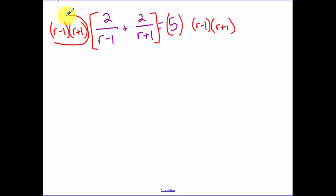When I take this and multiply it to that first term, the r plus ones cancel, so I'm left with 2(r+1). The r minus ones cancel because I have one in the denominator, one in the numerator. When I take this and multiply it to that second term, the r plus ones cancel. So we have 2(r-1) is equal to five times, multiplying those together we get r squared minus one.